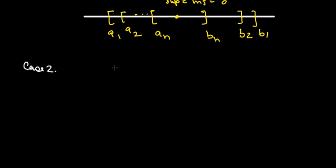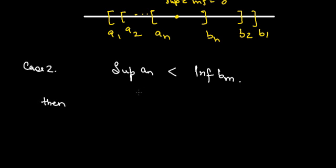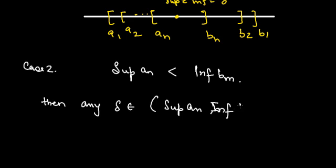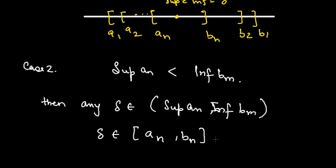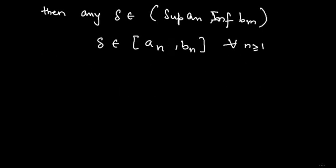Case two: supremum of AN is strictly less than infimum of BM. Then by the mere definition of an interval, any delta belonging to the open interval (sup AN, inf BM) will work, and again that gives us that delta belongs to [AN, BN] for all N ≥ 1.